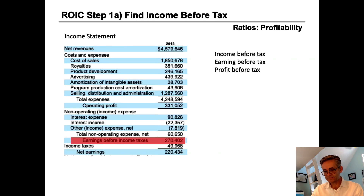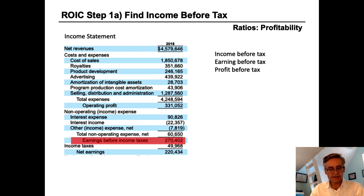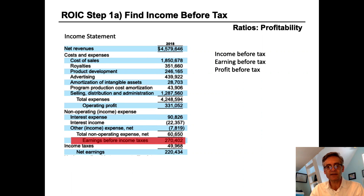For step one, we need to find income before tax. This is often identified on the income statement as it is here. For Hasbro — this is the Hasbro income statement for 2018 — you can see it says earnings before income taxes. Sometimes it could be labeled as income before tax or profit before tax, but here it's clearly labeled at $270 million.